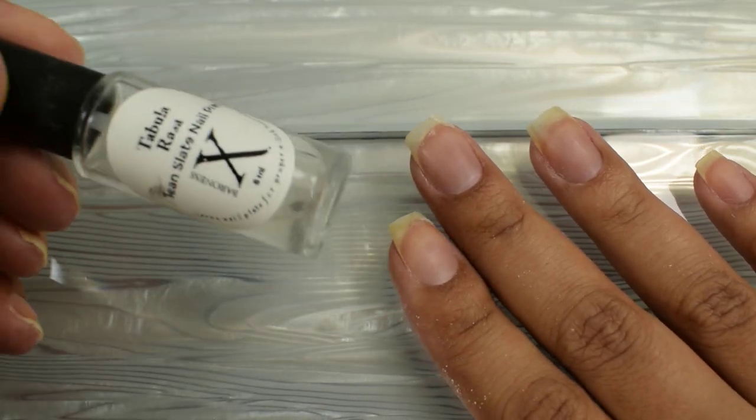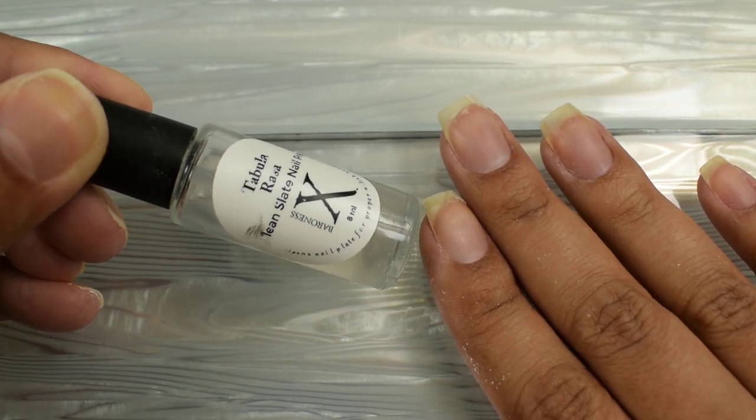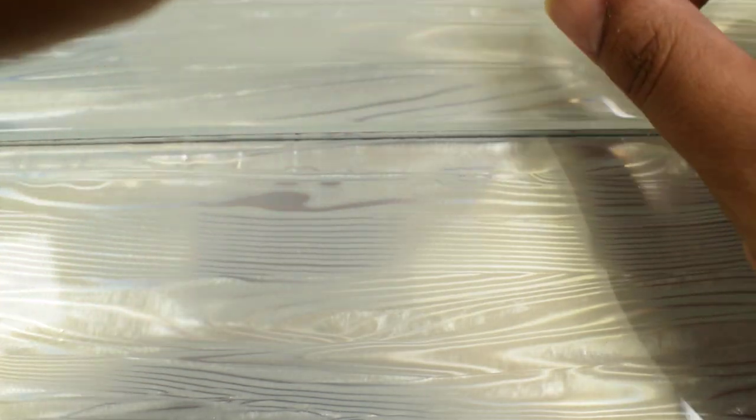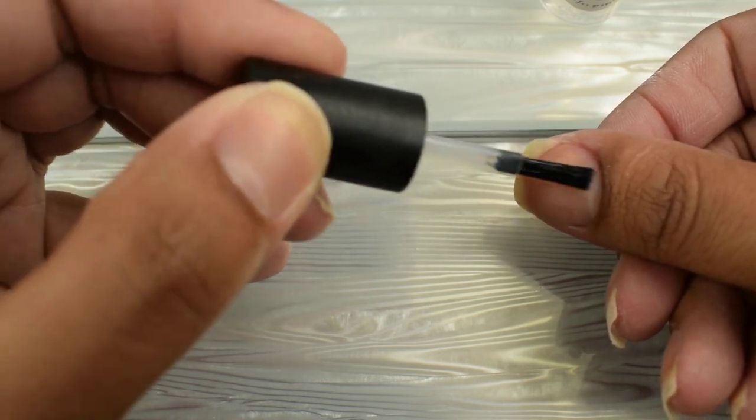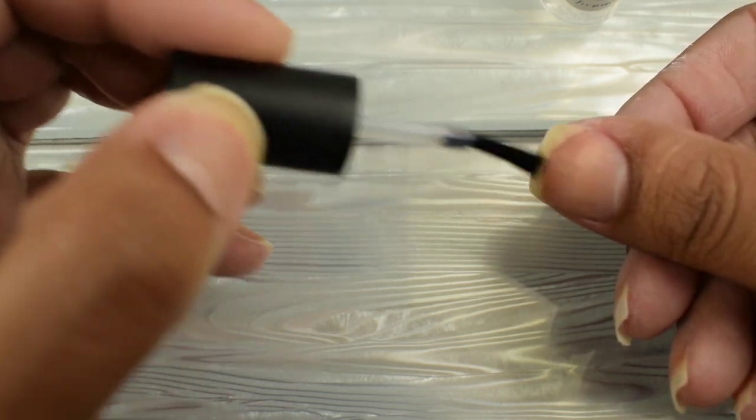Now here I'm going in with Baroness X's Tabula Raza. This is basically a nail dehydrator. It's kind of like alcohol-based. This one was a PR sample, but I do use it a ton. I've used two bottles of it so far. It's wonderful.